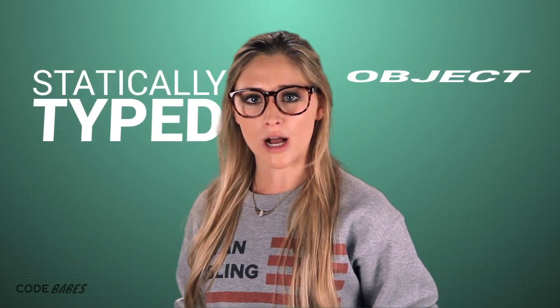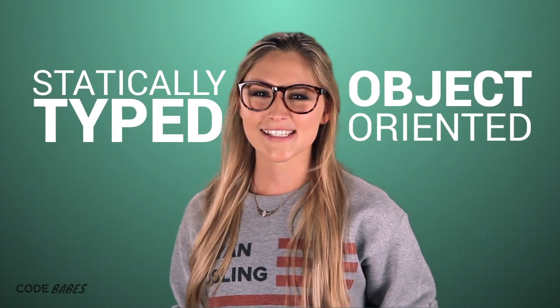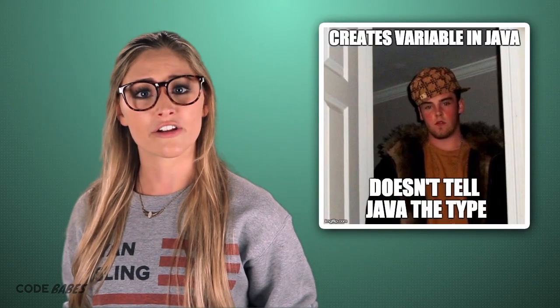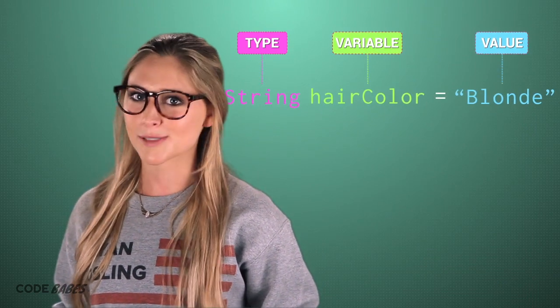To be an uber badass Android programmer, you need to know Java — the language native Android apps are written in. Java is an old-school, super stable programming language that is used all over the place. Java is a statically typed object-oriented language. Statically typed means we always have to tell Java what's in a variable or what your code is going to return. We'll explain more later.